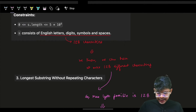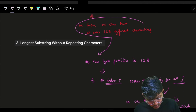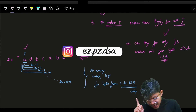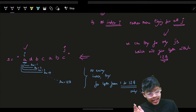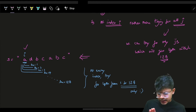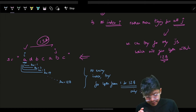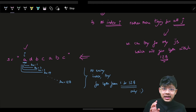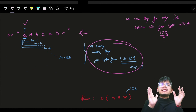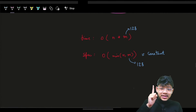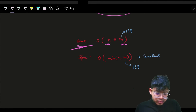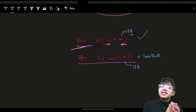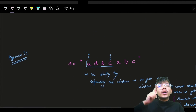Since the maximum length is 128, instead of trying all j up to n, I only need to try up to i plus 128. So j ranges at most 128 positions from i. This reduces the time complexity to O(n × 128), which is O(n × k) where k is 128. This will pass, but can we still optimize further?